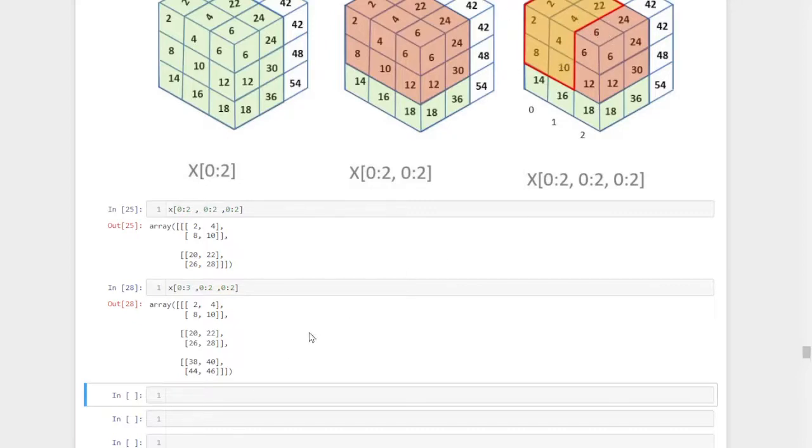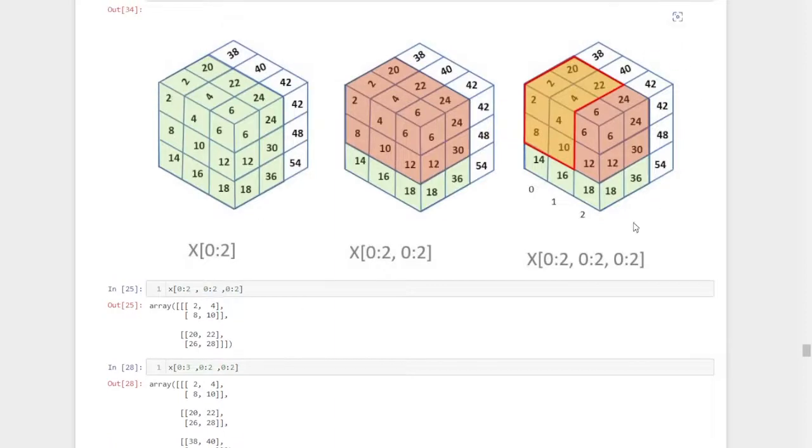So in different ways you can use different values of indexing and try to extract different elements from the three-dimensional NumPy array. You can imagine or visualize this image, so it will be more easy to understand and memorize these things.